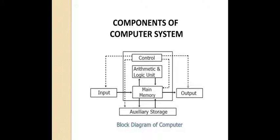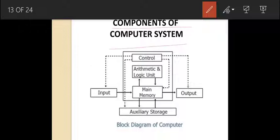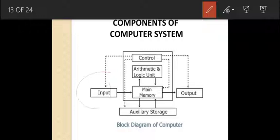Components of a computer system. This is the block diagram of a computer: input, CPU, output. A computer is an electronic device that works according to instructions given by us. It accepts the data, processes the data, and gives us the desired output. This is called the input-output cycle.